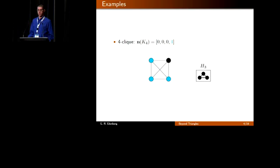Let's step through a few examples. If you consider the four-clique, then take any three vertices. For example, these three, they form a triangle. These three also form a triangle, and so on. So the three profile of this graph is a four on the right and zeros everywhere else.